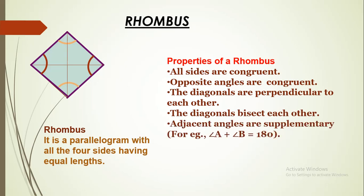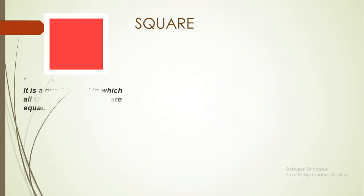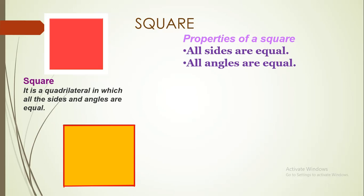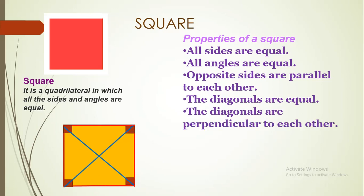Next, we have Square. It is a quadrilateral in which all sides are equal and angles are also equal. Properties: all sides are equal. All angles are equal and each angle is 90 degrees. Opposite sides are parallel to each other. Diagonals are equal, diagonals are perpendicular — the angle between them is 90 degrees — and diagonals bisect each other.